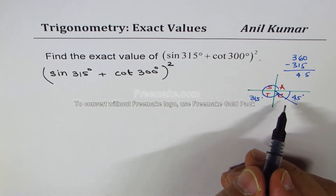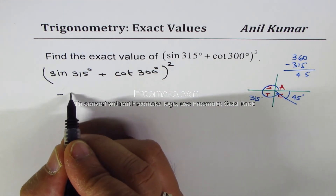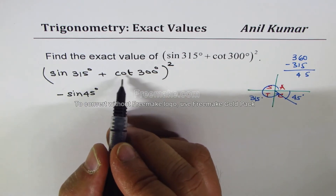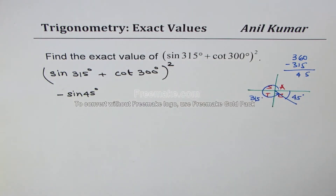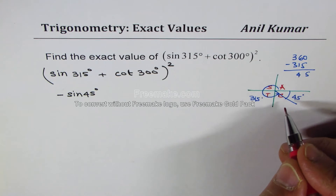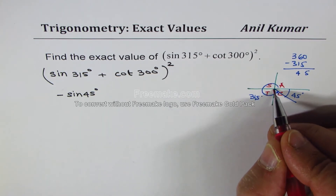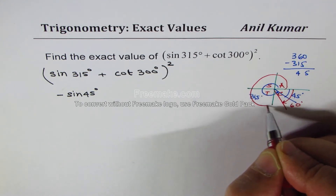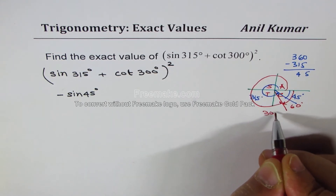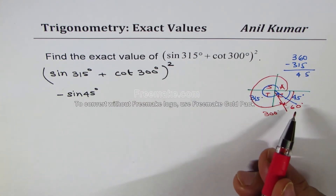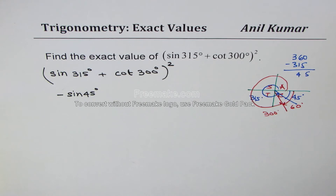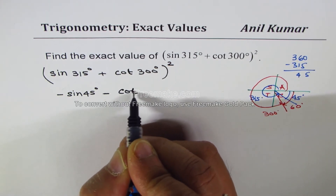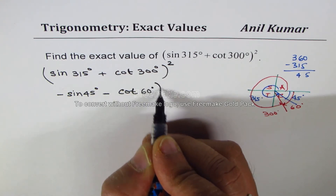Cotangent 300 degrees is also in quadrant 4 — 60 degrees less than 360, so the acute angle is 60 degrees. Since tan is negative in quadrant 4, cotangent 300 will also be negative. Therefore we write this as minus cotangent 60 degrees, whole squared.